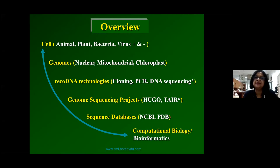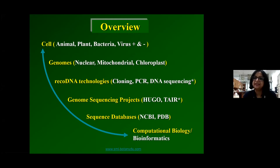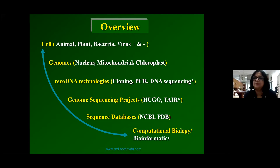Sequence data is available to the public domain because of various recombinant DNA technologies such as cloning, PCR, and DNA sequencing. DNA sequencing technologies have evolved over time. In addition to Sanger sequencing, there are various next-generation sequencing platforms based on Illumina, PacBio, and so on, that provide the sequence data available for various genomes from different cells.